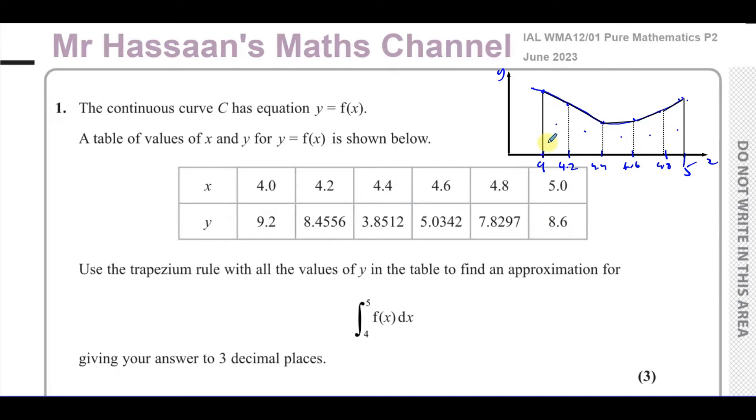So how does the trapezium rule work? Well, what we do is we think about the area of this first trapezium. I'm going to call this here Y1, and this Y2, and this Y3, and this Y4, and this Y5, and this Y6.